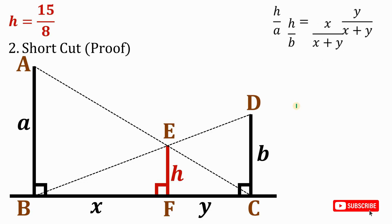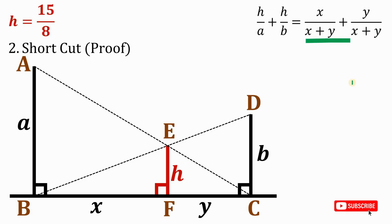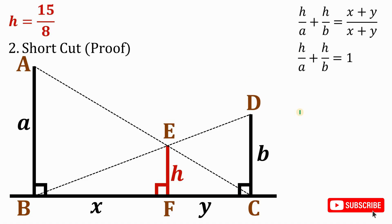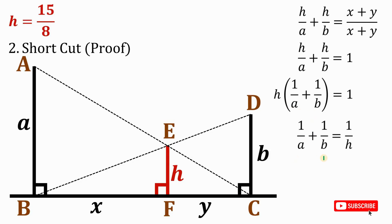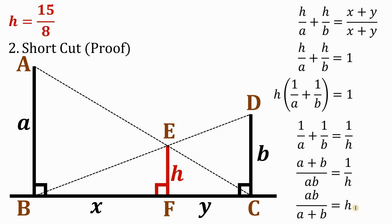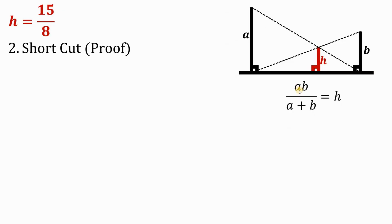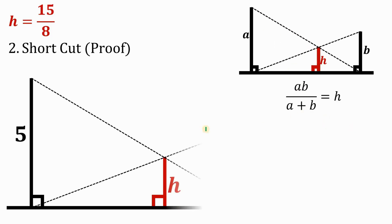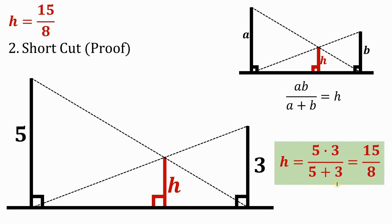Factor out H on the left-hand side, then divide both sides by H. Simplify the left-hand side and take the reciprocal. The value of H is AB over (A plus B). So no matter what value of A and B, this shortcut always works. In our given scenario, H equals 5 times 3 over (5 plus 3), which is simply 15 over 8 units.